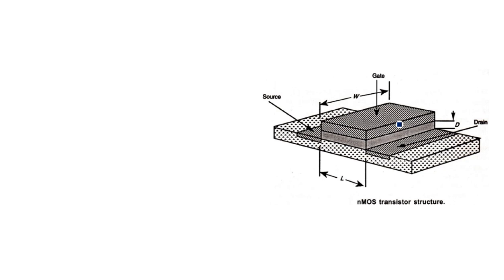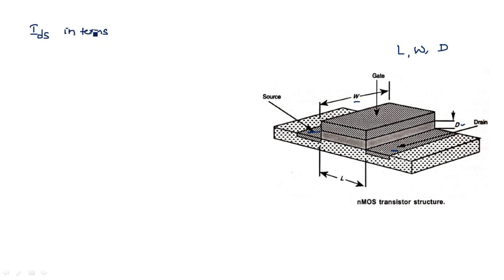This is the structure of the MOSFET transistor in three dimensions. It has a source terminal, a drain terminal, and an oxide layer with thickness D (capital D is the oxide layer thickness), above which we have the polysilicon gate terminal. The channel existing between source and drain has length L and width W. So the three parameters from this figure are: L is the length of the channel, W is the width of the channel, and D is the thickness of the oxide.